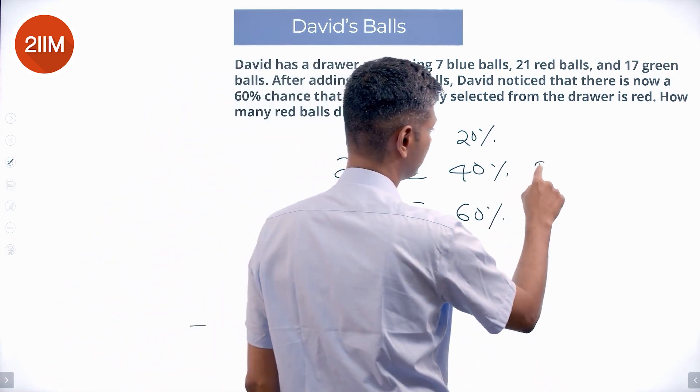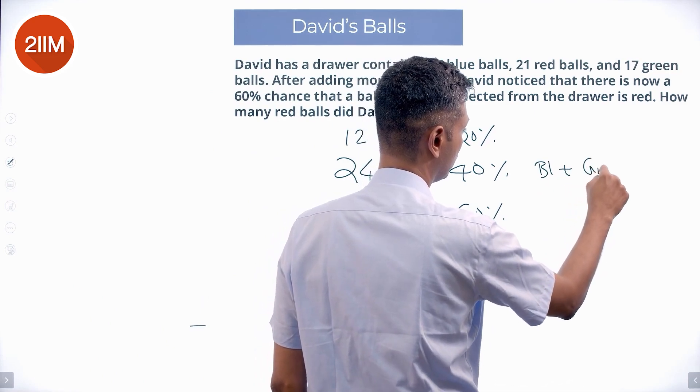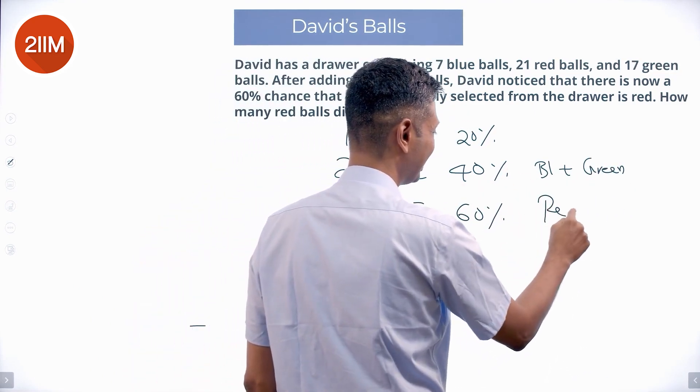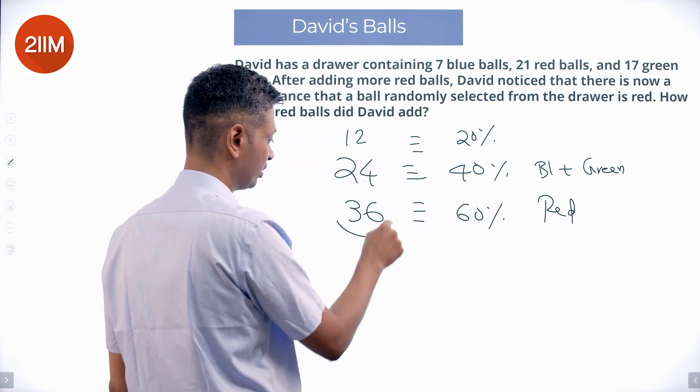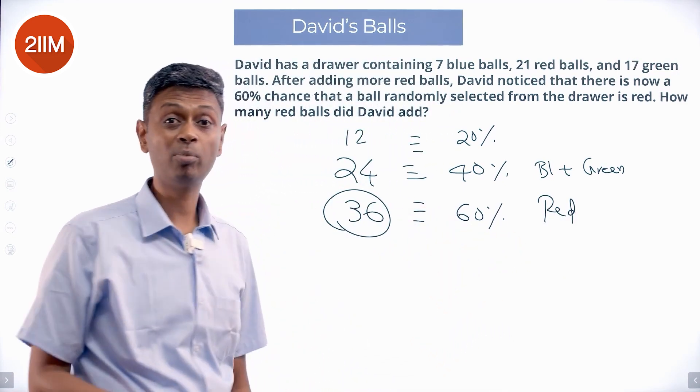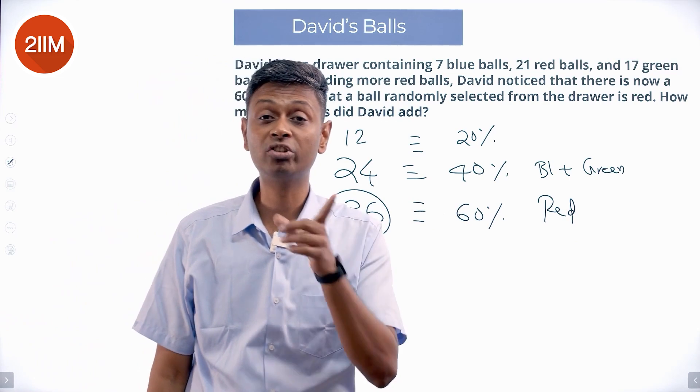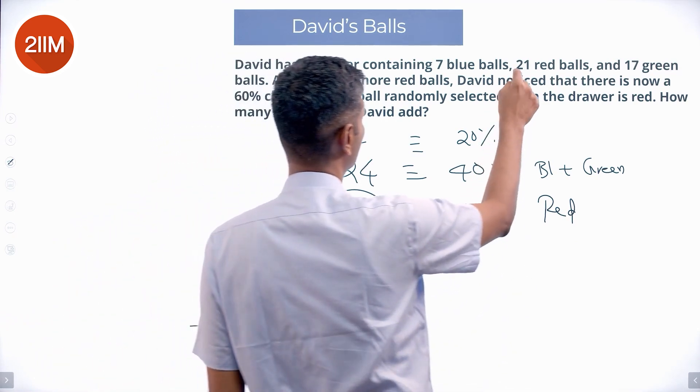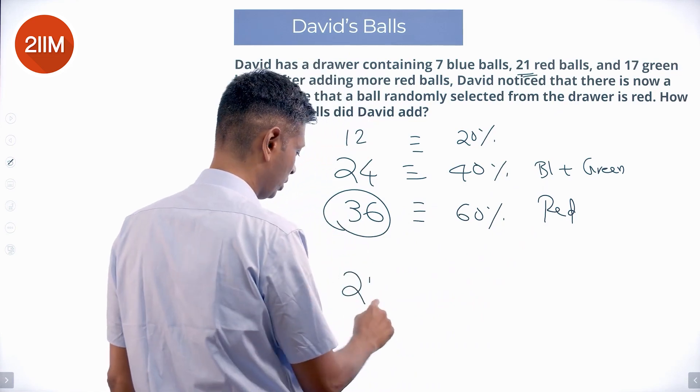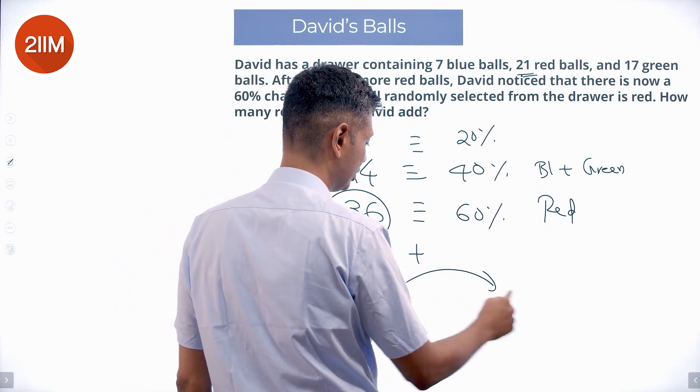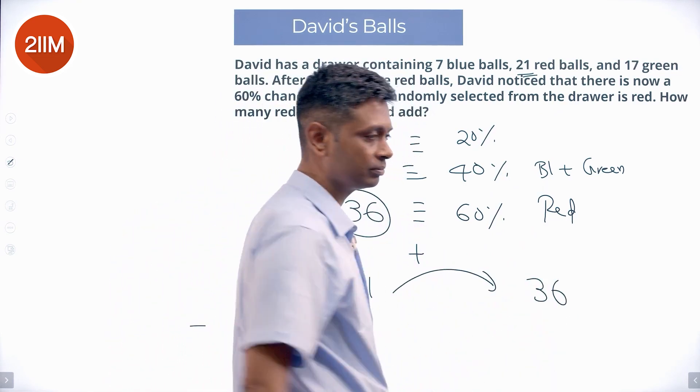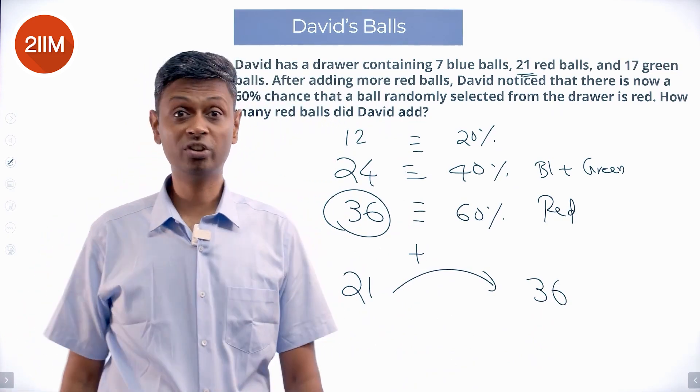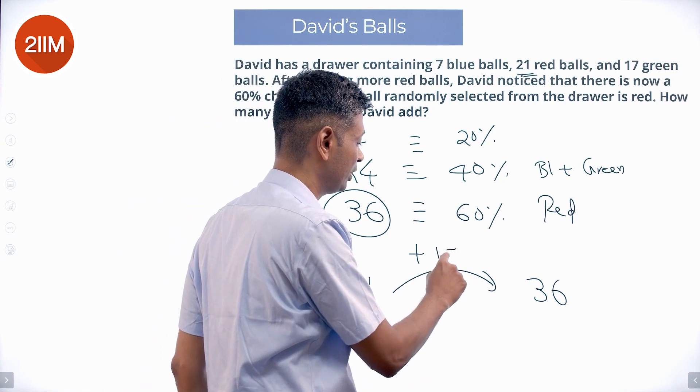So blue plus green is 40%, this is 24. Red 60% should be 36. Or my box should contain 36 red balls. How many do I have right now? I have only 21. I have 21. I should add something to make it 36. How many am I adding? If I add 10 more, I'll get only 30. I want 36. Or I'll add 15 more.